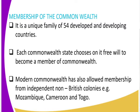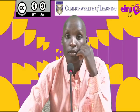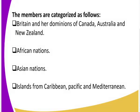Modern Commonwealth has also allowed membership from independent non-British colonies. While it originally comprised British colonies and protectorates, it has opened its doors to non-British colonies — for example, Mozambique, Cameroon, and Togo, which were formerly French protectorates. Members are categorized into four categories: Britain and her dominions such as Canada, Australia, and New Zealand; the African nations; the Asian nations; and the islands from the Caribbean, Pacific, and Mediterranean.